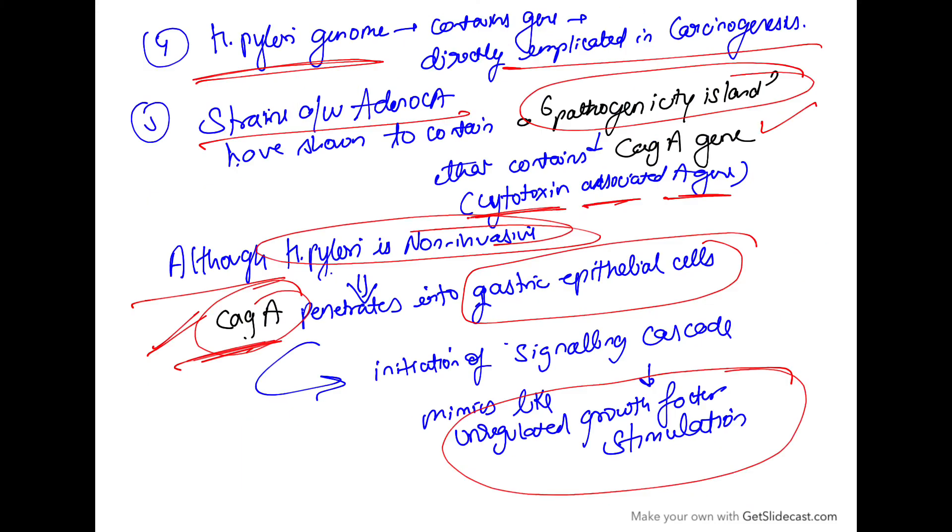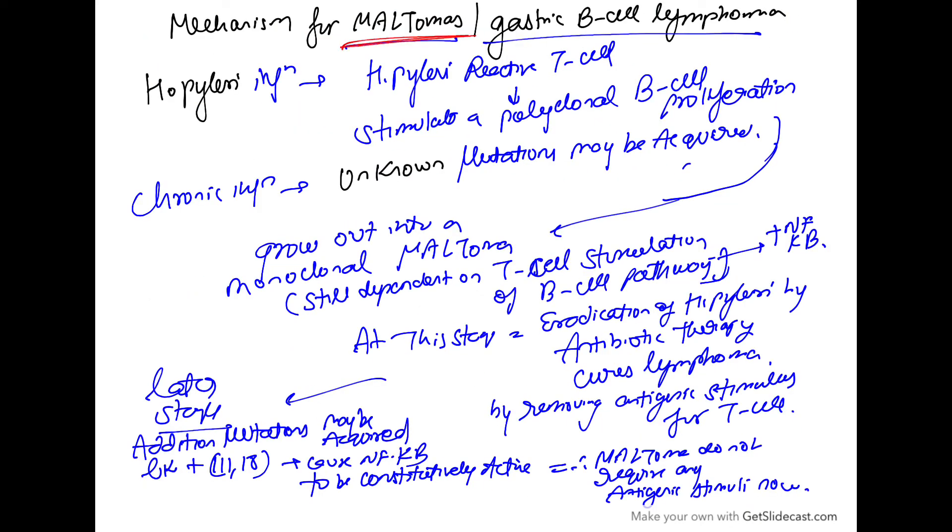Now, what is the mechanism? This was the mechanism of adenocarcinoma. Now, let us see the mechanism of MALTomas or gastric B cell lymphomas. H. pylori infection will lead to production of H. pylori reactive T cells and these T cells,